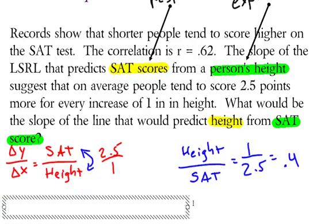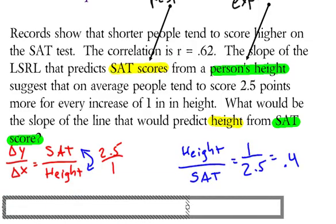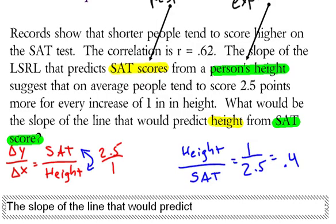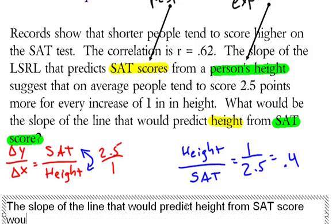And when we type it out, I think what we would say is, what would the slope of the line that would predict height from SAT score be? We just type that in. The slope of the line that would predict height from SAT score would be 0.4.